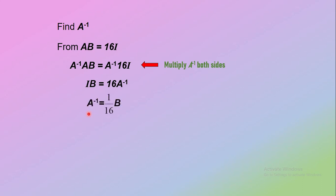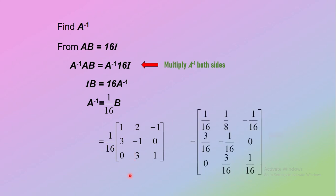Then A inverse is equal to 1 over 16 times matrix B. Next, substitute with matrix B into the equation. Then write as a single matrix by expanding constant 1 over 16 with the elements in matrix B.